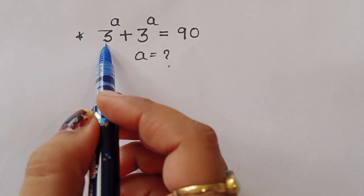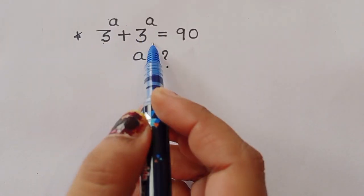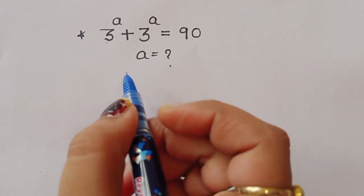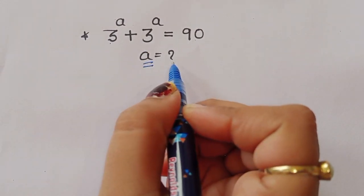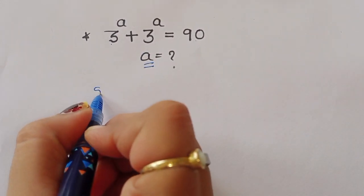The question is: given 3 power a plus 3 power a is equal to 90, we have to find out the value of a. What is the value of a? Let's see the solution.